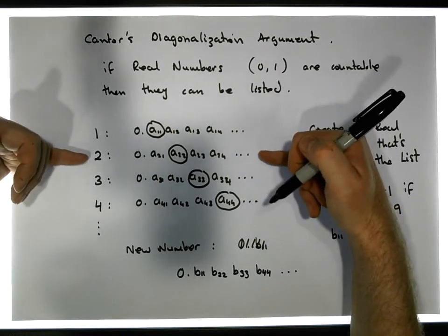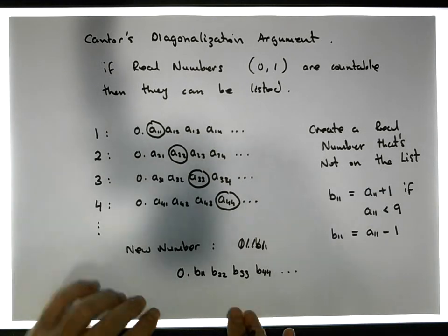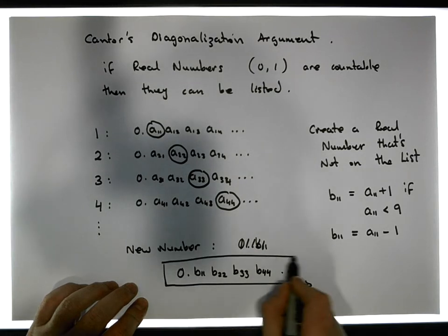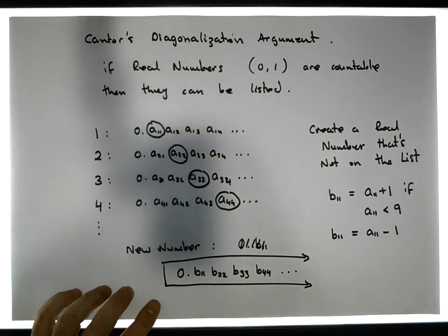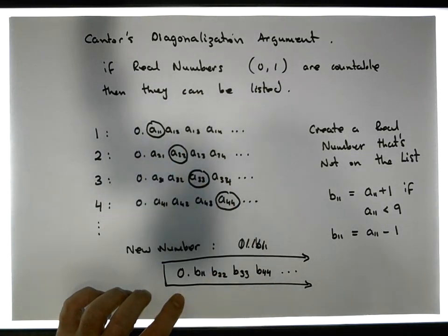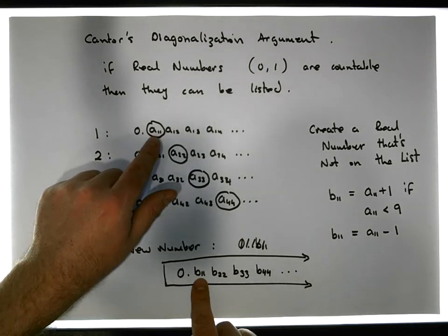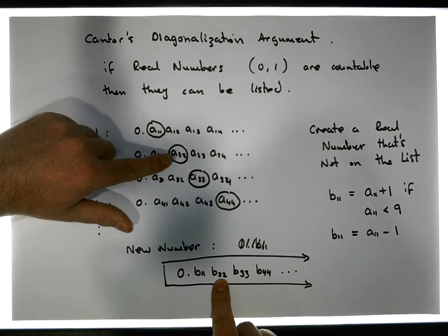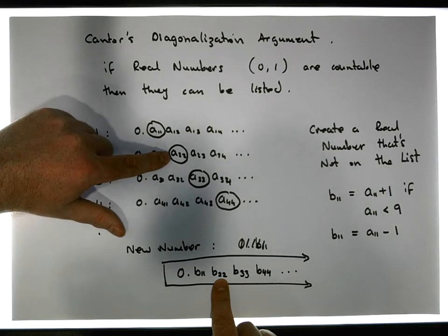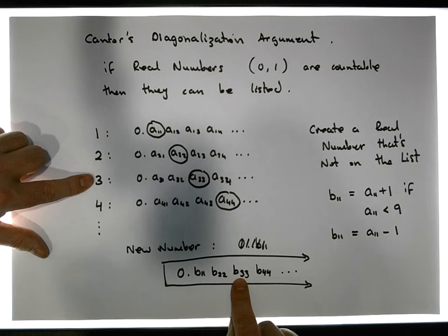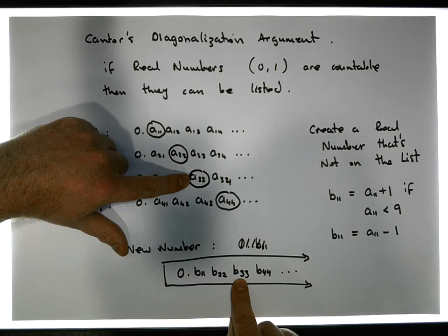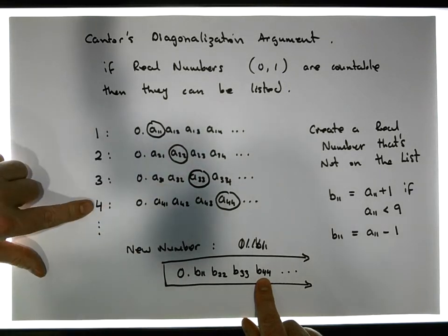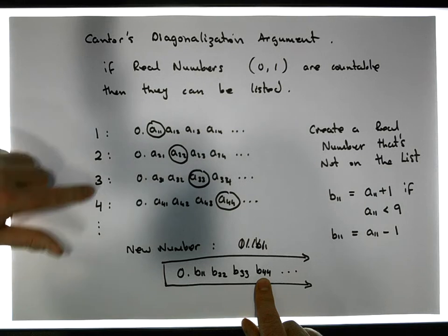What we're trying to do here — what Cantor's diagonalization argument attempts to do — is to construct a new real number that is different to every single number in this particular list. The reason why it's different to the first number is because its first digit is either one more or one less. The reason it's different to the second is because its second digit is either one more or one less. Similarly, it's different to the third and fourth numbers for the same reason, and we continue on in this fashion.